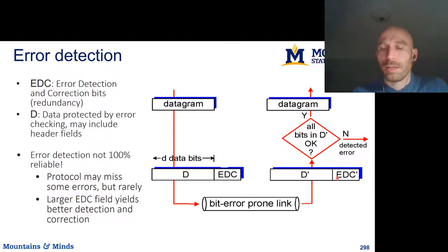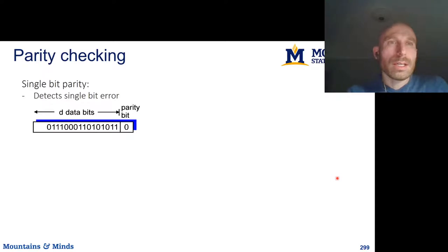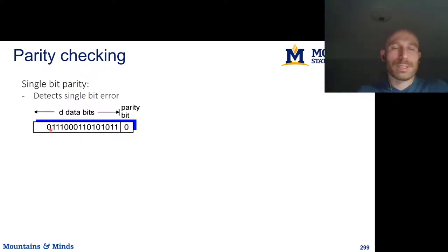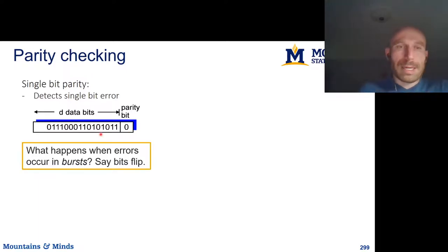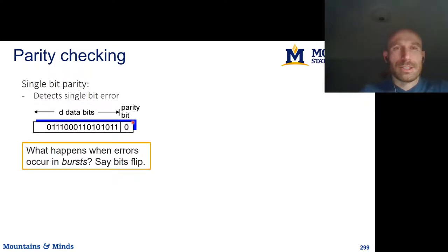Let's start with a very simple mechanism called parity checking. We take the bits D and add a parity bit as the XOR of these bits. If one of these bits flips, the result won't match the parity bit and we can detect the error. However, errors often flip in bursts — meaning adjacent bits flip together — and if two bits flip, the D portion is wrong but we might not detect it with just a single parity bit.